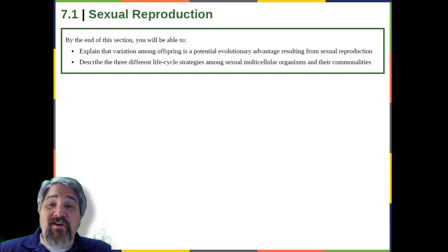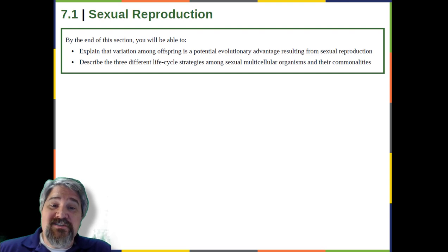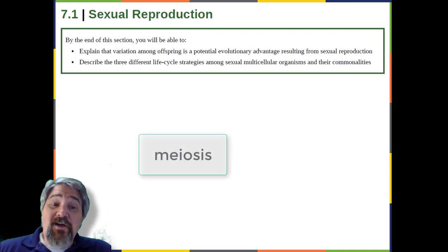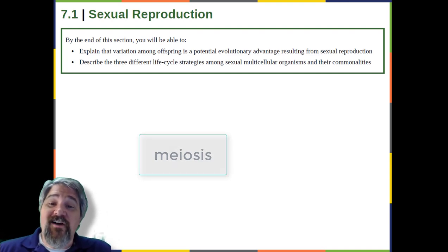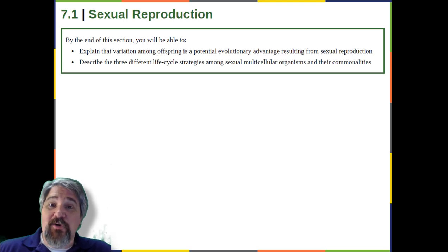The only source of variation in asexual organisms is mutation. This is also the ultimate source of variation in sexual organisms. In addition, those different mutations are continually reshuffled from one generation to the next when different parents combine their unique genomes, and the genes are mixed into different combinations by the process of meiosis. Meiosis is the division of the contents of the nucleus that divides the chromosomes among gametes. Variation is introduced during meiosis, as well as when the gametes combine in fertilization.